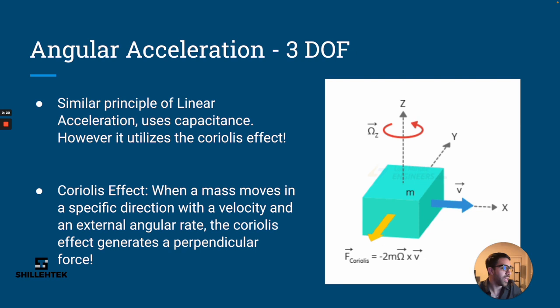For those who don't know what the Coriolis effect is, it's the force in yellow there on the right. How this force is generated is: when a mass moves in a specific direction - let's say in this example on the right in the positive X direction - and we have an external angular rate in this case in the Z direction, the Coriolis effect then generates a perpendicular force.